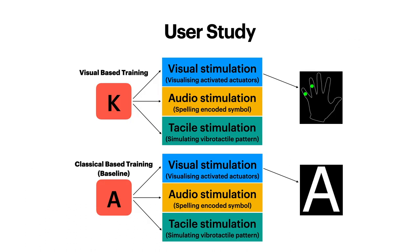To evaluate our proposed method, we performed a user study with 18 participants where we compared our visual-based training method with a baseline. As shown here in the slides, both methods used audio stimulation which spelled the encoded symbol, tactile stimulation which simulated the vibrotactile pattern that encodes the symbol, and a visual stimulation where both methods differ.